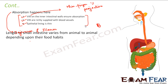The length of the small intestine varies from animal to animal depending on food habits. The total alimentary canal is about nine meters, much of which is the small intestine. Carnivores like tigers eat meat, which digests faster, so their intestines are shorter. Herbivores feed on grasses and cellulose, which take longer to digest, so their small intestines are longer.